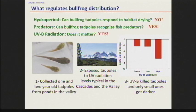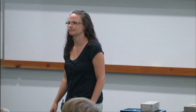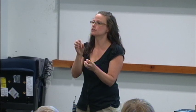UVB does matter, and it looks like this could be one of the factors controlling dispersal at high elevations. To wrap up: we used biogeography to show that our tadpoles are sourced back along the Mississippi River Valley. This is different from other invasion ranges — the Chinese invasion range was sourced back to frogs from Florida and the southeast, Europe was sourced back to the northeast, and South America was sourced west of the Mississippi River. That could explain why there are so many differences in invasion dynamics around the world.